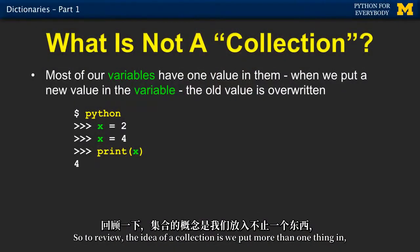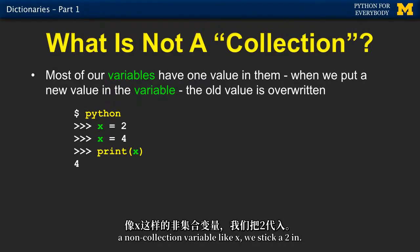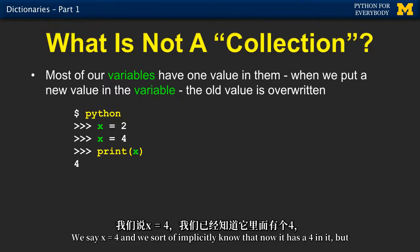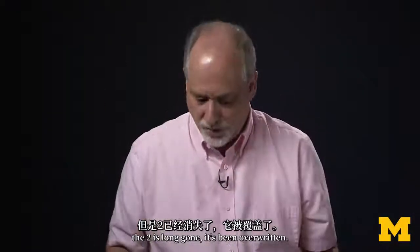So to review, the idea of a collection is we put more than one thing in, whereas a regular old variable that's not a collection, a non-collection variable like x, we stick a two in. We say x equals four, and we sort of implicitly know that now it has a four in it. But the two is long gone. It's been overwritten.